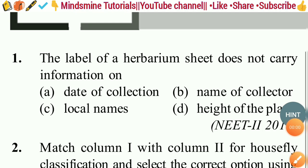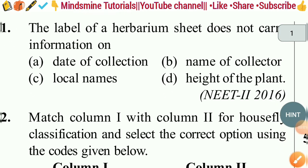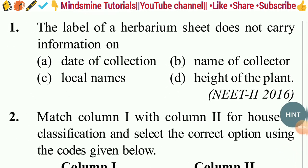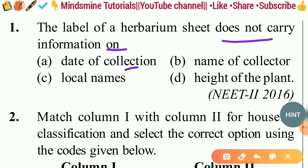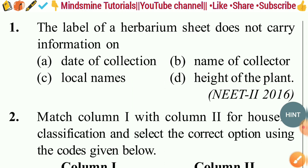The first question: 'The label of herbarium sheets does not carry information on...' — options include date of collection, name of collector, local name, site of the plant. This question appeared in NEET 2016. The right answer here is option D: height of the plant.